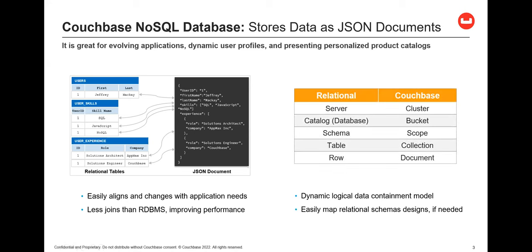How does this relate to relational? Couchbase, in addition to JSON documents, has a very dynamic, logical containment model. Data can just be stored within the database — which we call a bucket — as documents. But documents can also be organized in scopes and collections, which can be aligned to a relational schema. So for parts of an application that need more structure, Couchbase can support that. Where more flexibility is needed, we can model that as well.